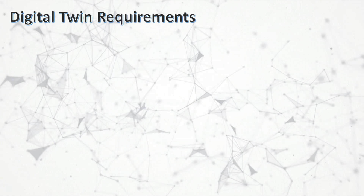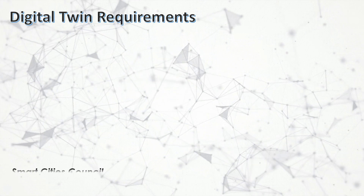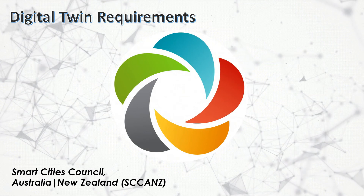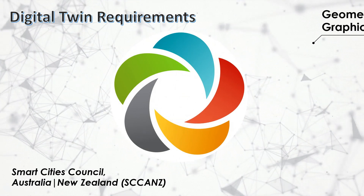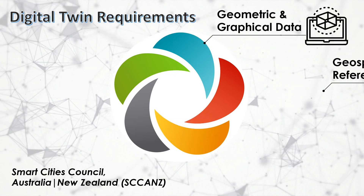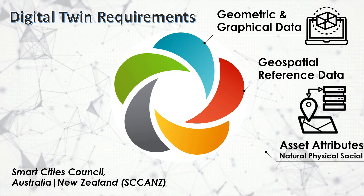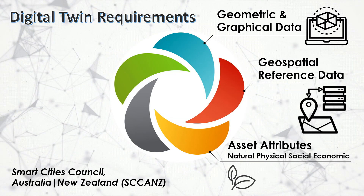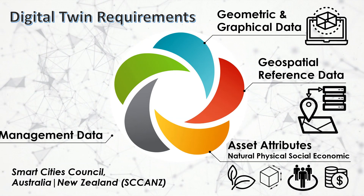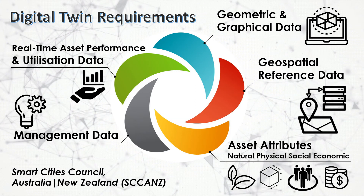It's hard to generalize and say what requirements a Digital Twin has. However, according to the Smart Cities Council Australia and New Zealand, a Digital Twin must include the following datasets: geometric and graphical data, geospatial reference data, a set of attributes — natural, physical, social and economic — management data, and real-time asset performance and utilization data.